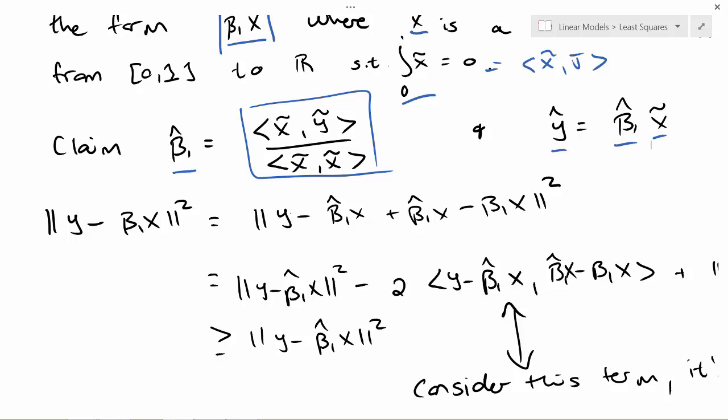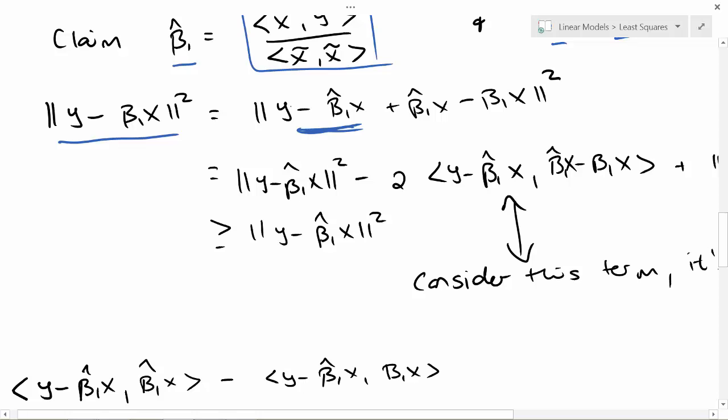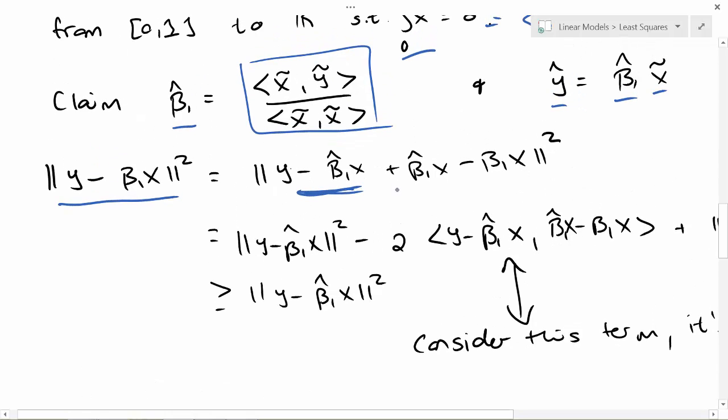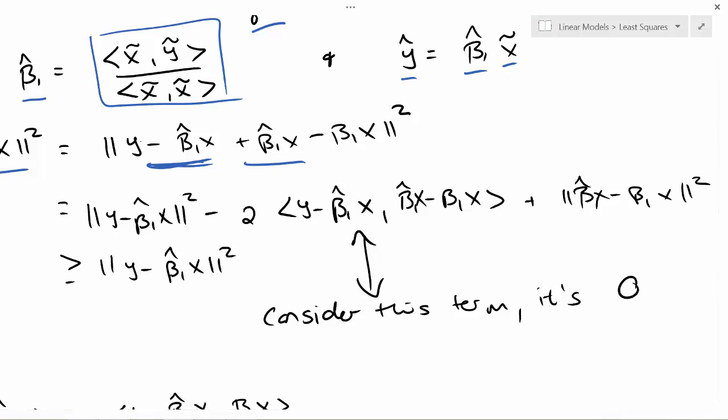Here I'm going to define my predicted function as my beta hat times this x tilde function. Well, let's go through it. The argument is identical to that used when we did regression through the origin. We have y minus beta_1 x quantity squared. We're going to subtract and add that function, so we've just added 0, which does nothing.